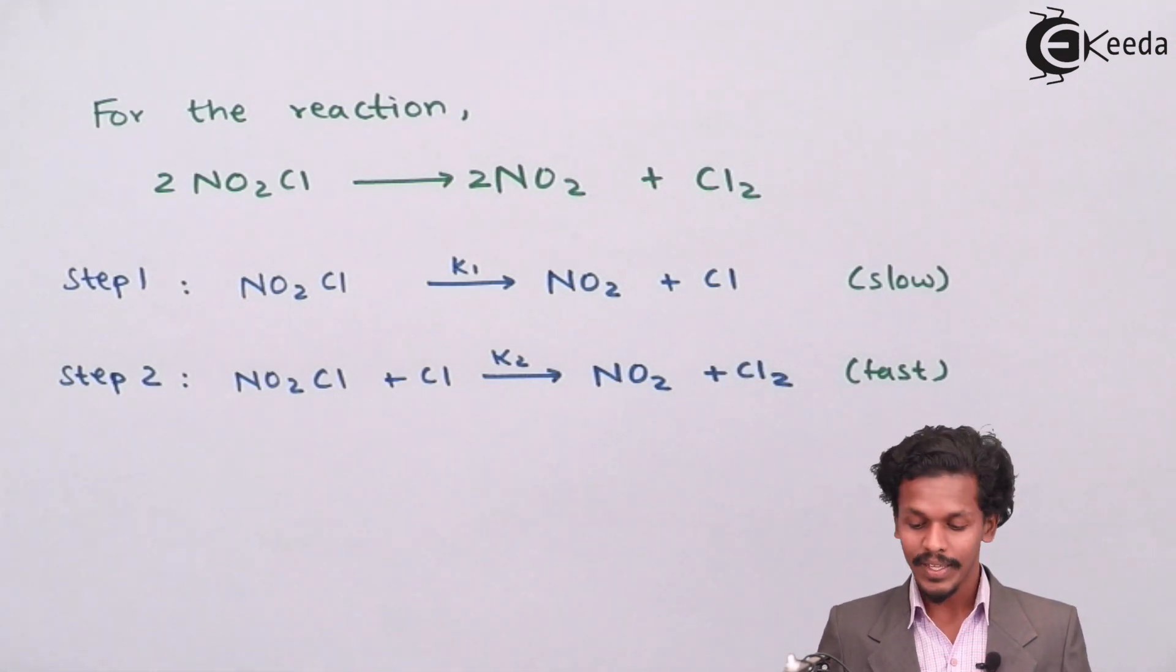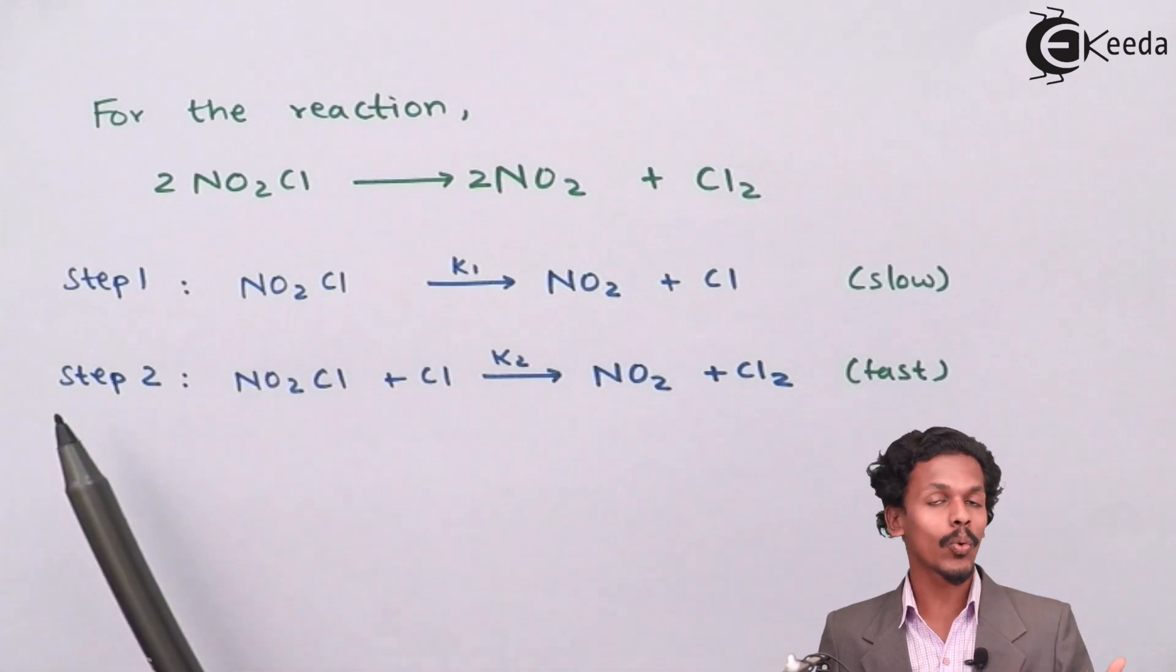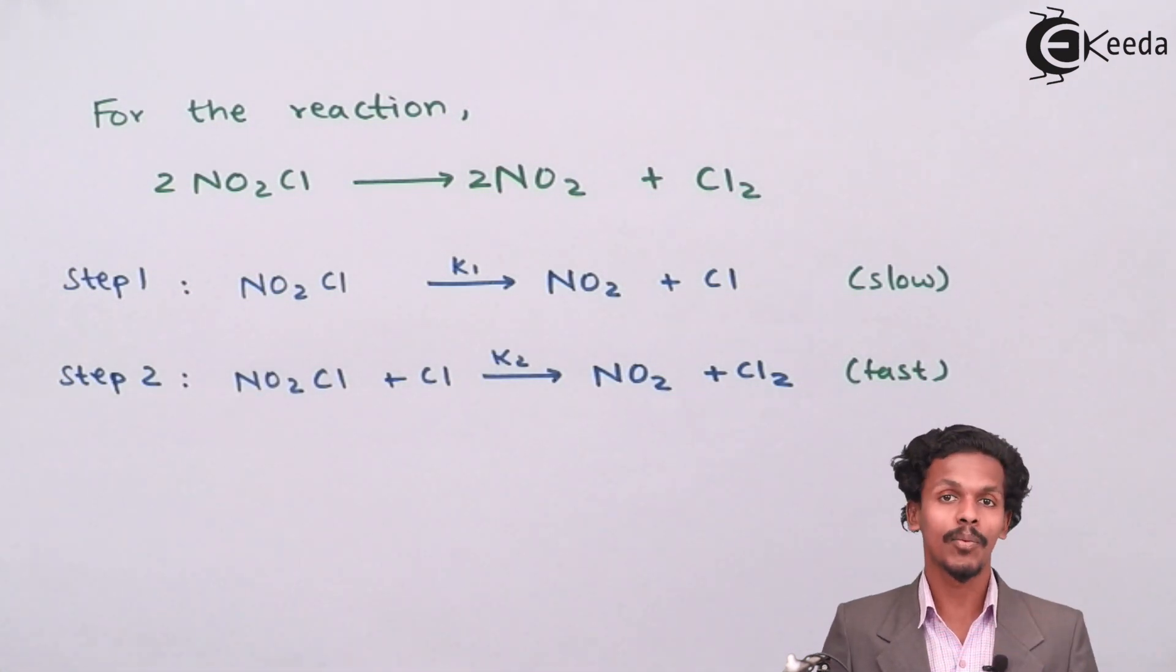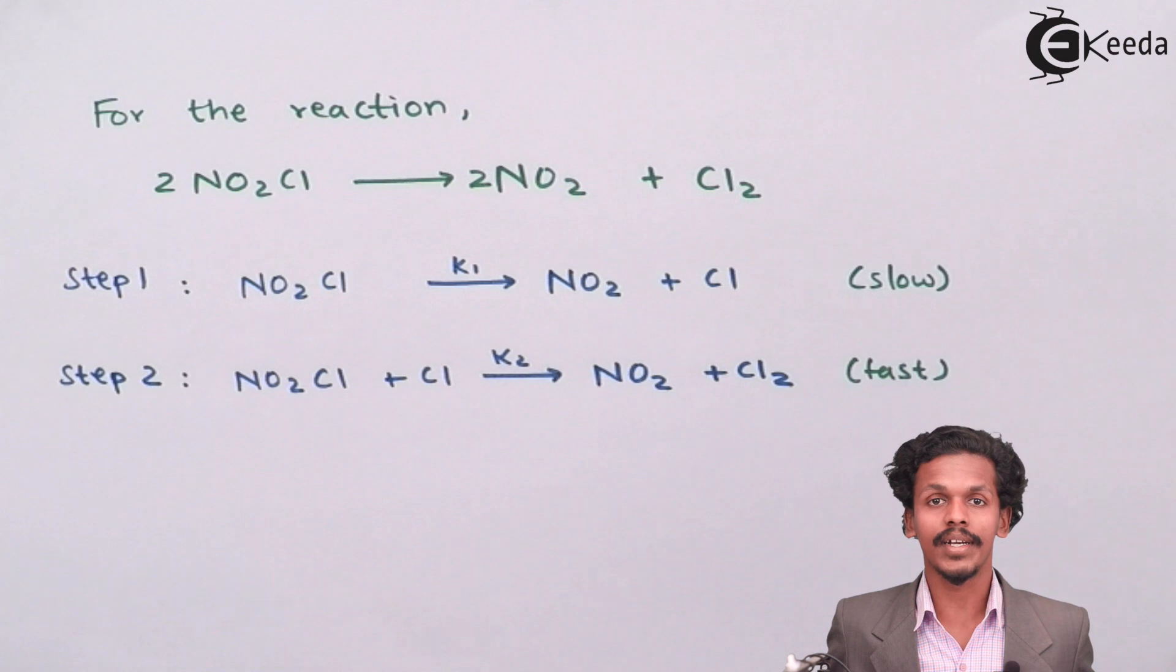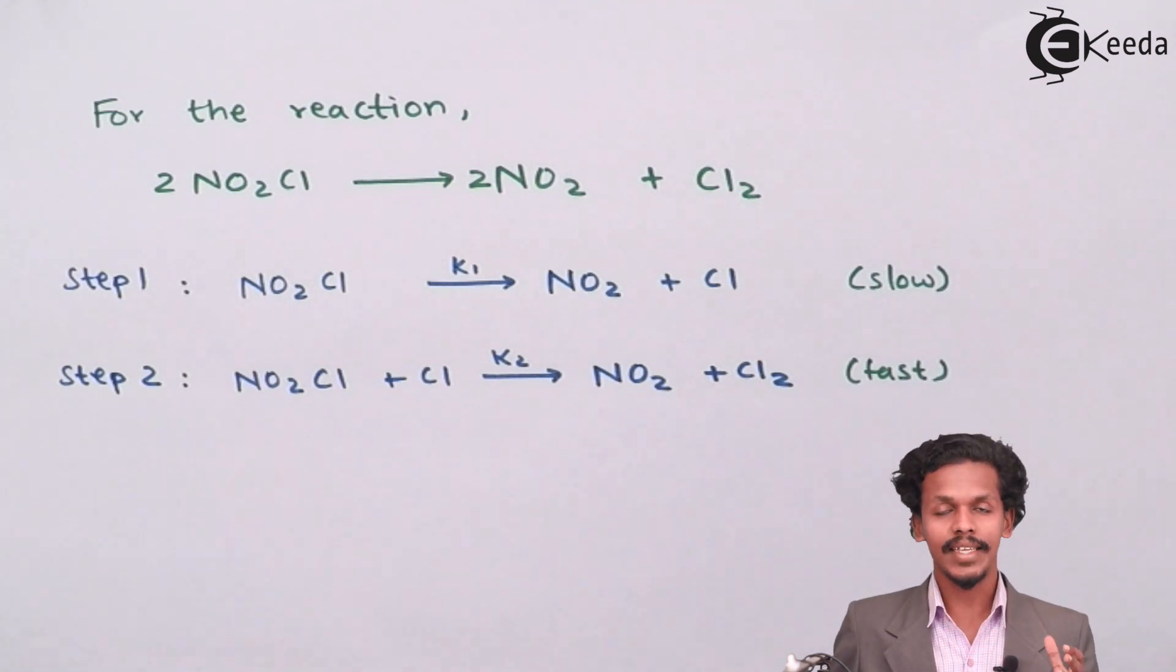So therefore the order of this reaction, that is this slowest step, can be said to be unimolecular. And this is known as the rate determining step that by which we could calculate the rate law and the rate of reaction.